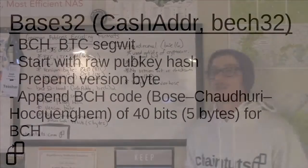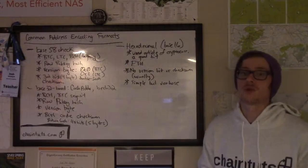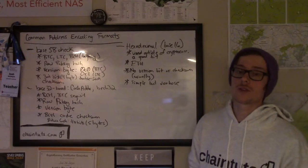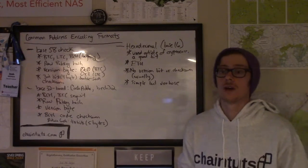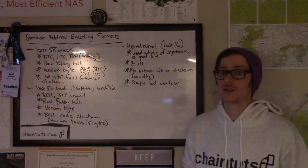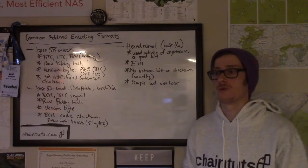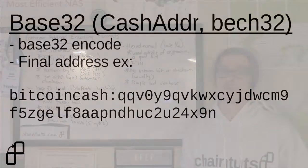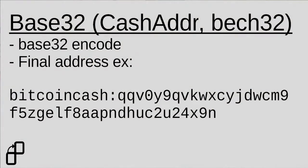A nice thing about Base32 is there are no capital letters. With Base32 addresses, you generally see them as lowercase, so there's no need to distinguish between, for example, an uppercase W or a lowercase W. That's generally fairly easy with fonts, but with handwriting it can get difficult, and Base32-based encoding systems solve that problem.